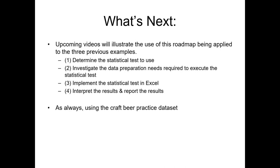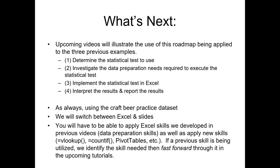As always, we'll be using the craft beer practice data set. We're going to be commonly switching between Excel and slides — illustrating the actual use of statistical testing in Excel, game planning, and interpretation. Keep in mind that we are building upon previous videos related to Microsoft Excel and analysis. We're going to have to apply some of the Excel skills developed previously, mostly data preparation skills such as using a VLOOKUP, a COUNTIF, or some basic bivariate analysis like setting up pivot tables. If a previous skill is used in the upcoming videos, we'll be fast-forwarding through that example in Excel.